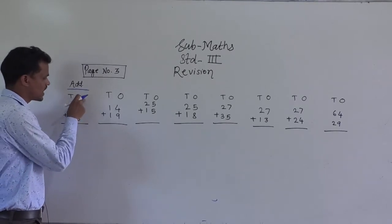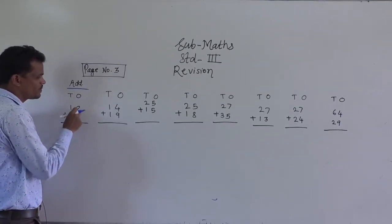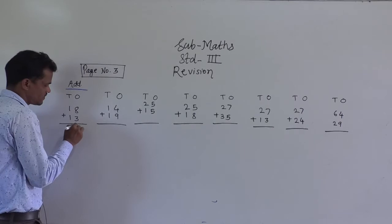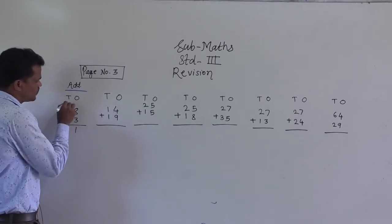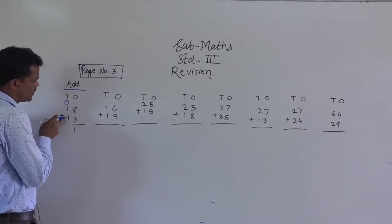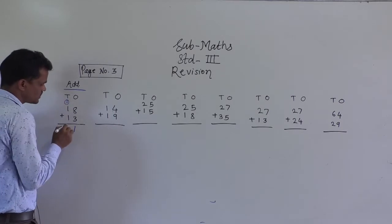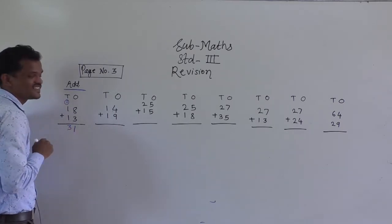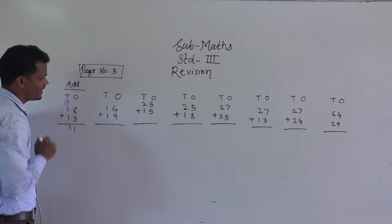Always you have to start from the ones place. 8 plus 3 is 11, so write 1 here and carry 1 to the tens place. Now, 1 plus 1 is 2, plus 1 carry is 3. So 31 is the sum of 18 and 13.